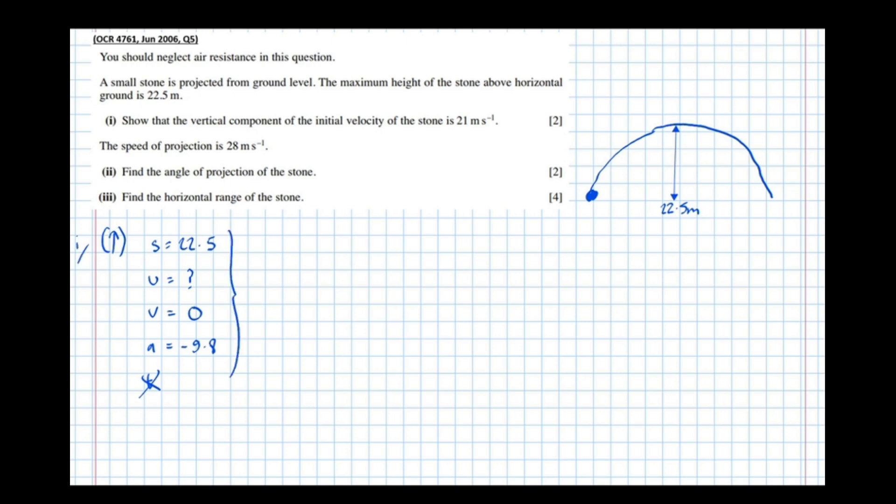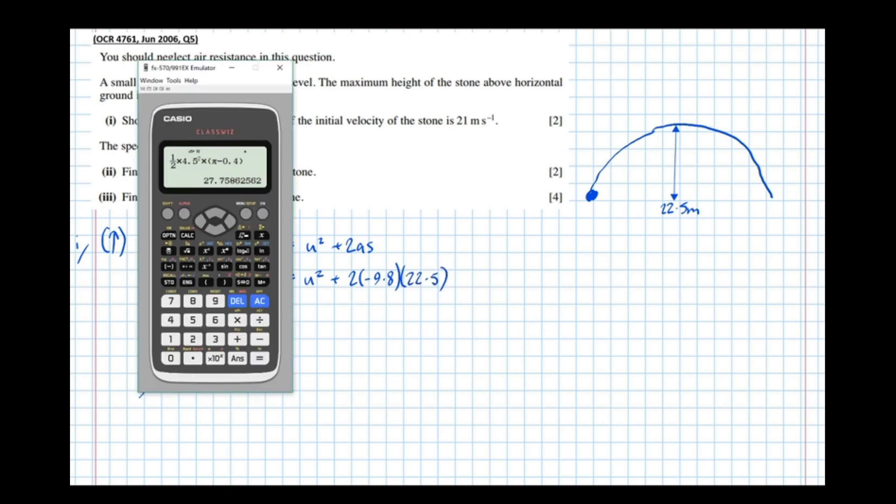I should label this part one as well. 21 metres per second. And so we've got V squared equals U squared plus 2AS. That's the equation that relates to this. So 0 squared equals U squared plus 2 times minus 9.8 times 22.5.